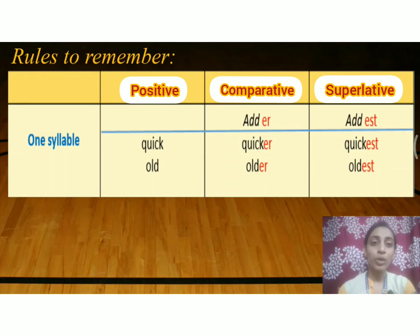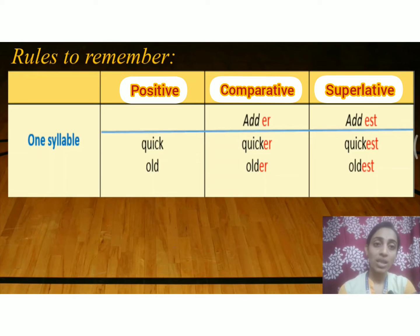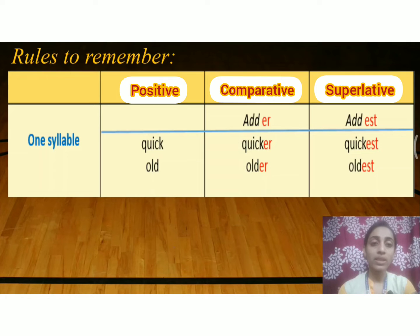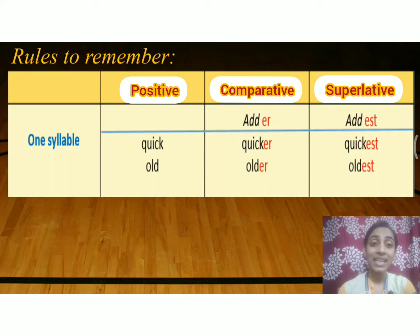The comparative form of 'quick' is Q-U-I-C-K plus -er: quicker. The superlative form of 'quick' is quick plus -est: quickest. Now let us try with one more example — the word 'old'. The comparative form of 'old' is old plus -er: older. The superlative form of 'old' is old plus -est: oldest. Very good.